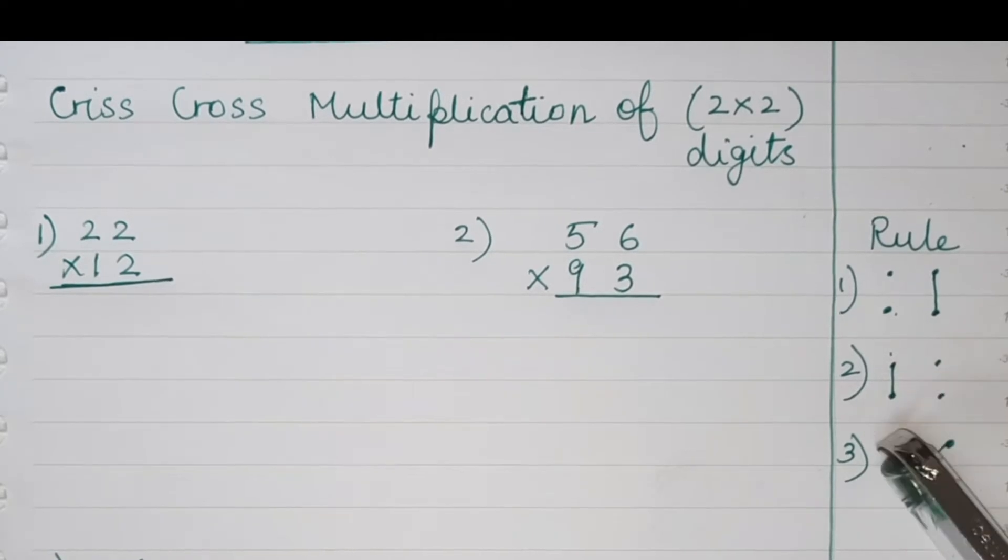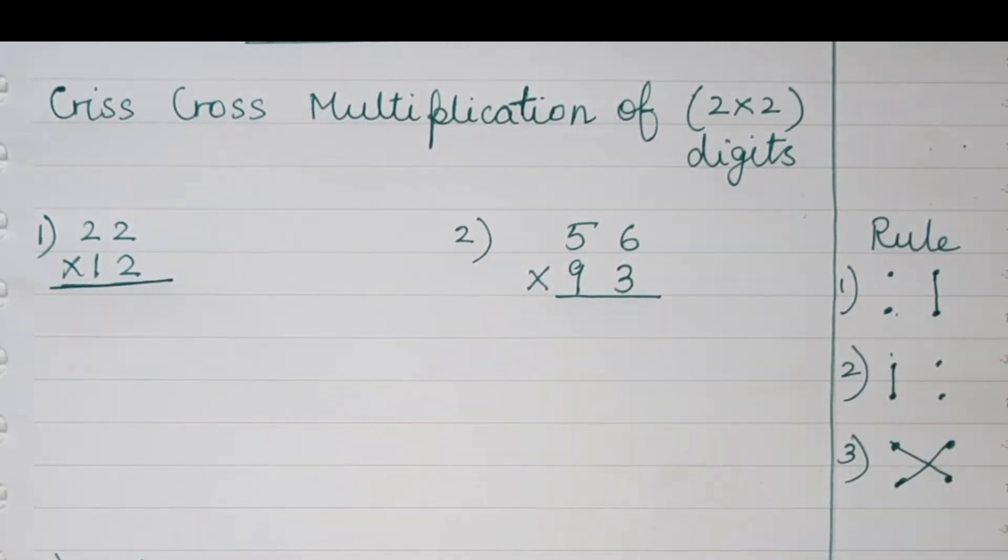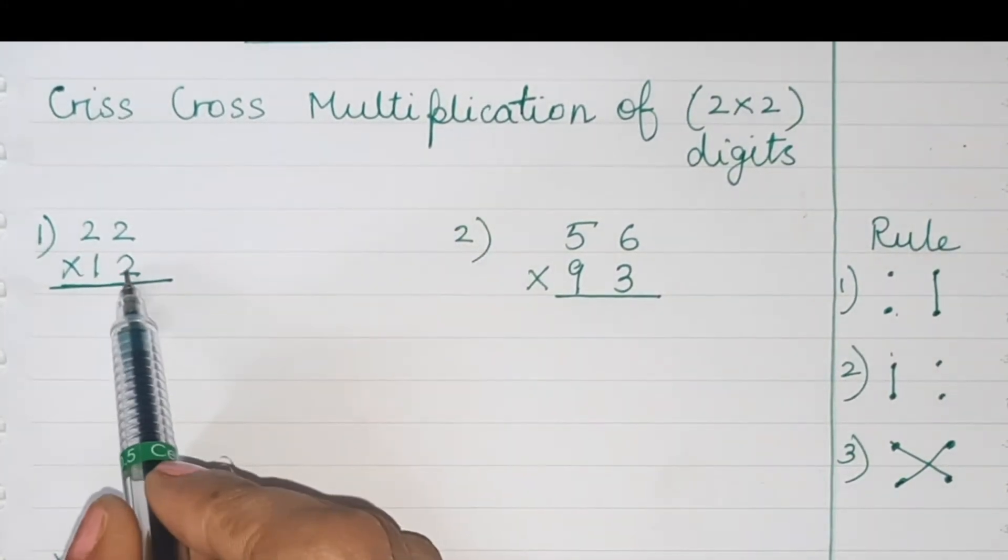Rule number one is multiplying digit on the right. Rule number two is multiplying digit on the left, and rule number three is cross multiplying. Now we'll do the first sum.